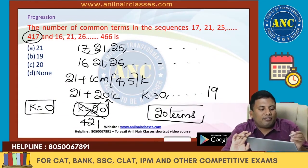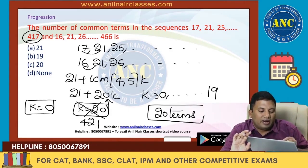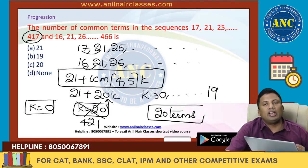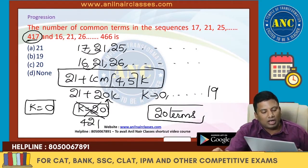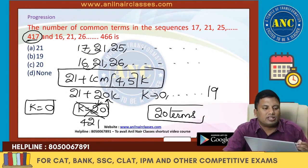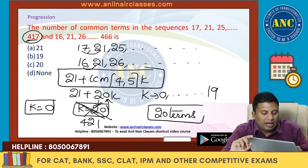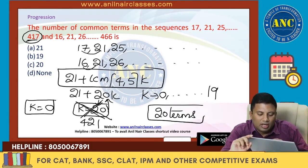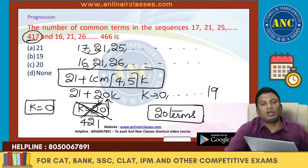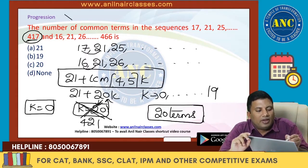The first series has a difference of 4, the second has a difference of 5. So the new series with the common terms is given by 21 plus LCM of 4 and 5 into K, which is 21 plus 20K. K value cannot be 20 because it gives 421. So K goes from 0 to 19, giving 20 terms total. This is a very important common terms concept.